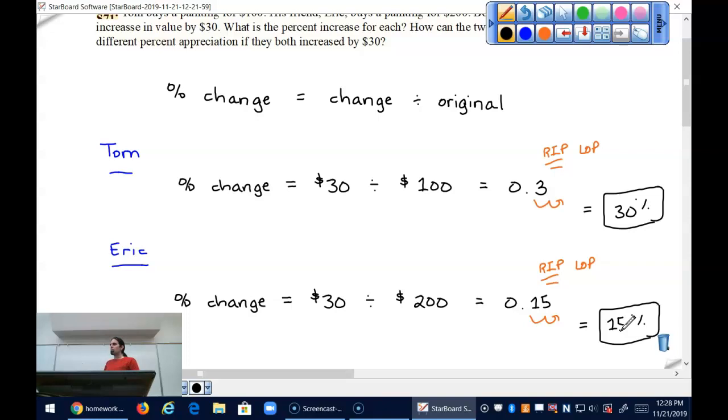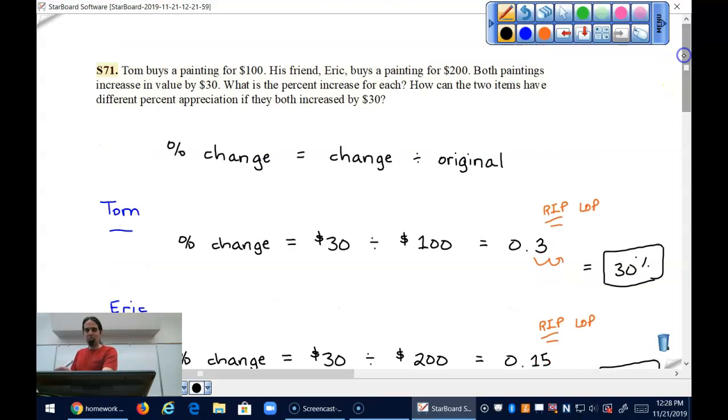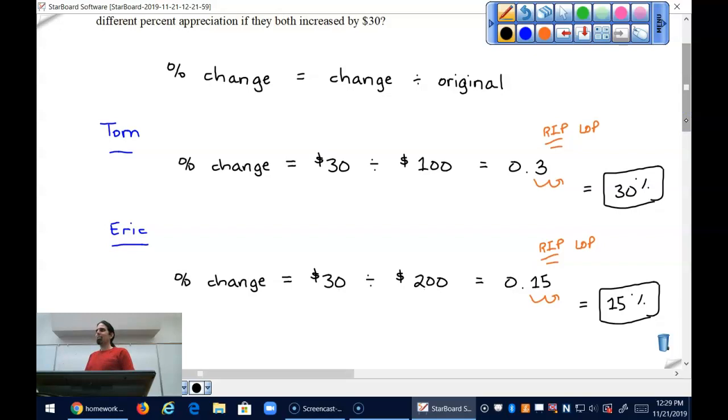How can they have different percent appreciation when they both went up by 30? It was 30 for both - why is the percent different? The ratio. It's different between 100 and 130 versus 200 and 230. 30 dollars is a bigger share of 100 than it is of 200. Whatever words make sense in your brain.